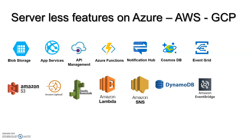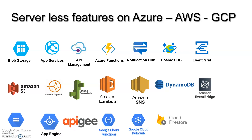Amazon S3 is a storage service. Elastic Beanstalk can be used to host your websites or web services. Amazon Lambda is a functions service, equivalent to Azure Functions. SNS is the Simple Notification Service. DynamoDB is a NoSQL database, and Amazon EventBridge is equivalent to Azure Event Grid.